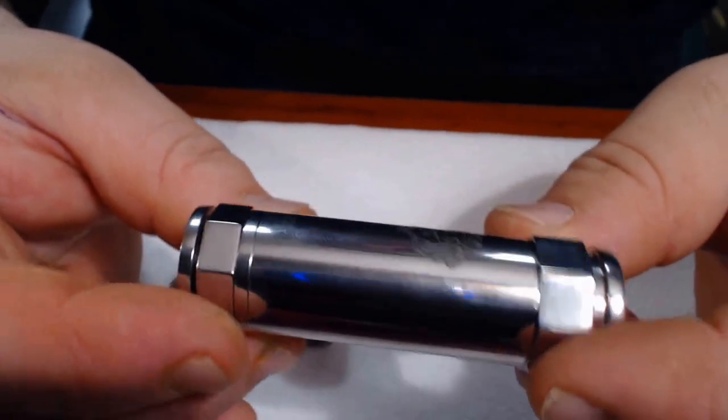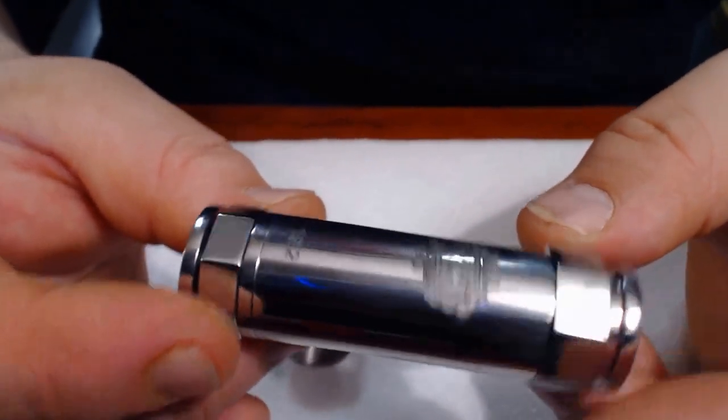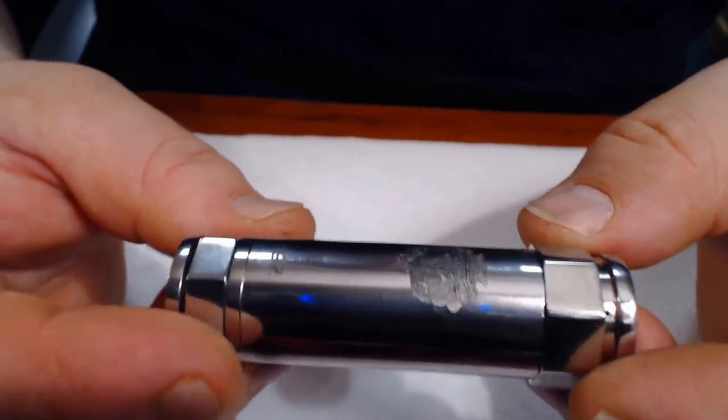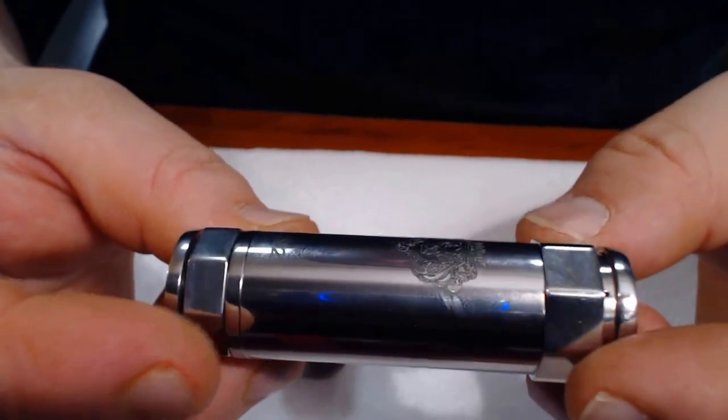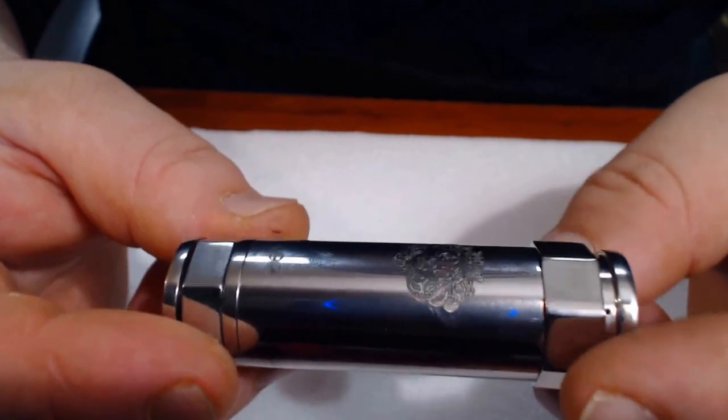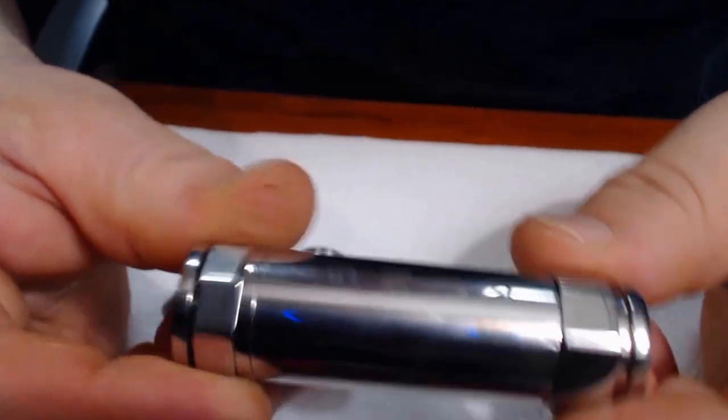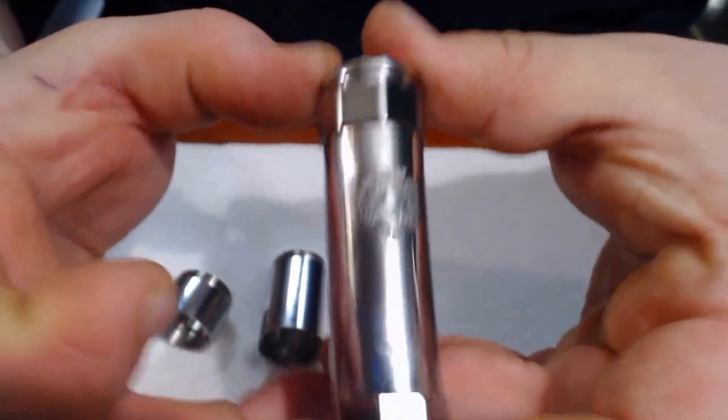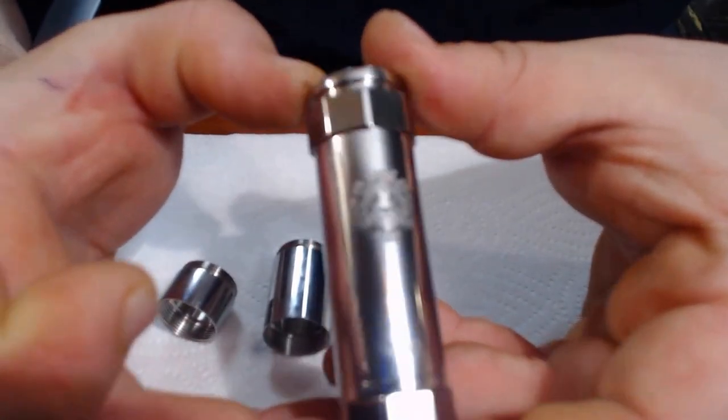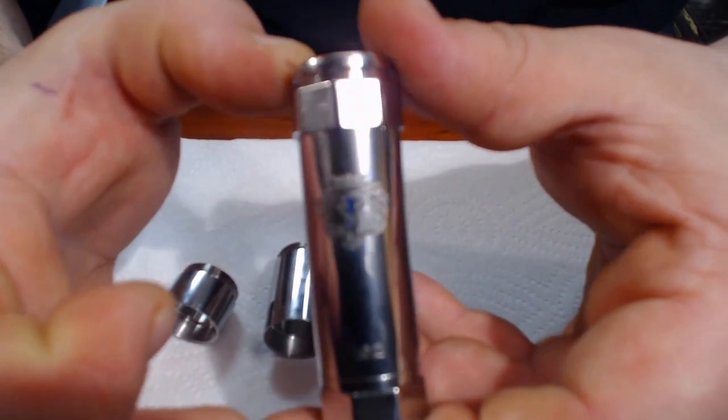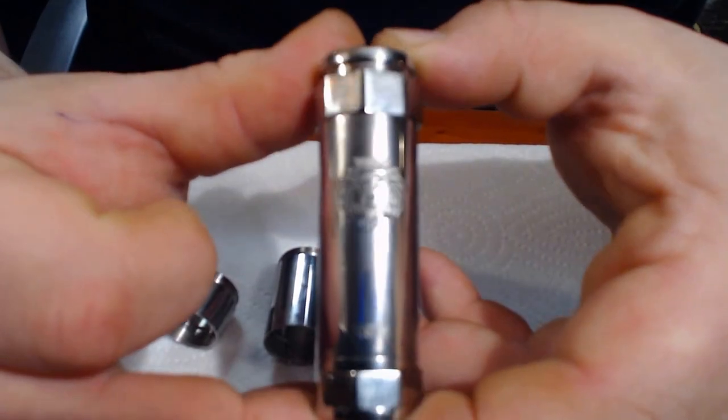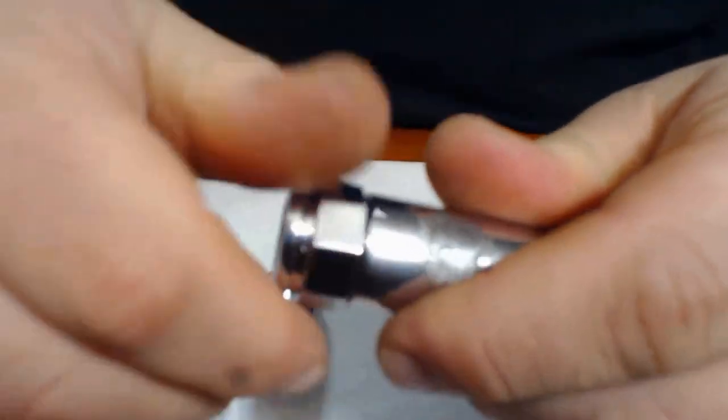Especially for the price, I believe it was $230. You can pick one of these up from vaperep.com, I'll leave a link below in the description. This is 18350 mode. It does take all size batteries from 18350 to 18650 and you can kick it in all three of those modes.